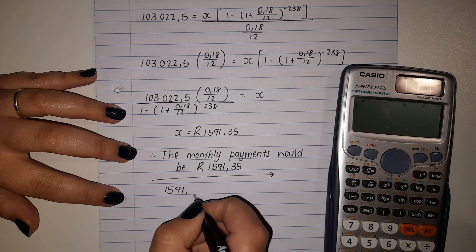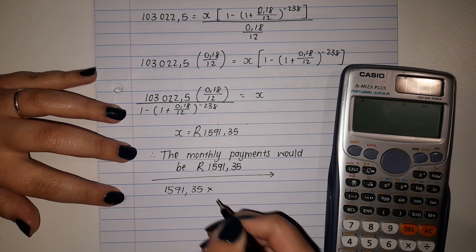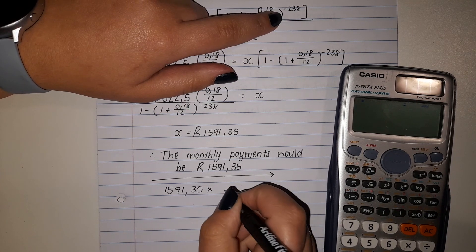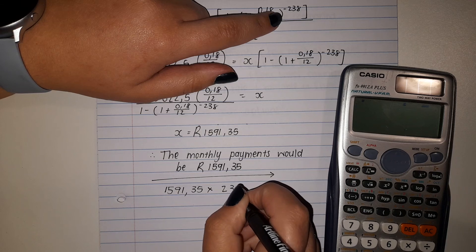Remember we started with 100,000 so we can say well it is 1591.35 times how many times she needs to repay it which is 238.